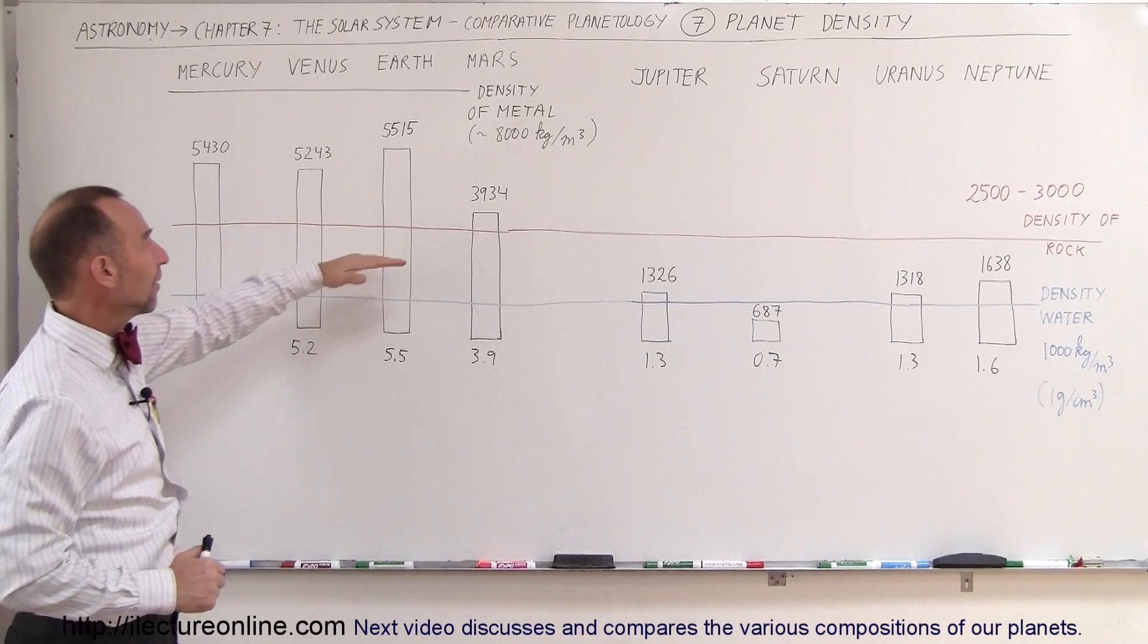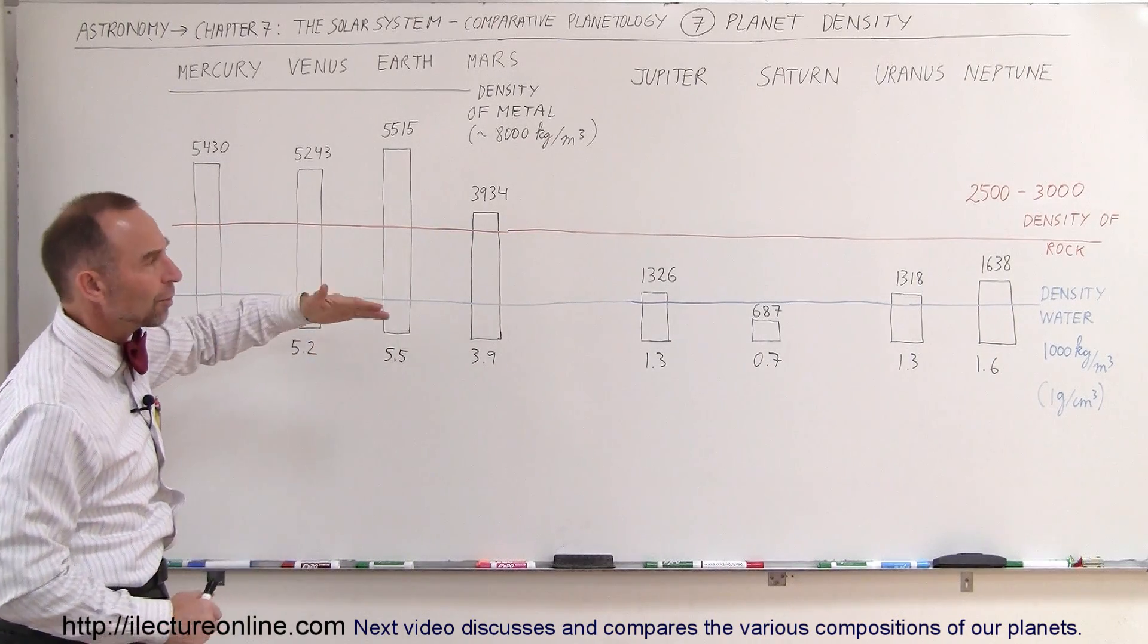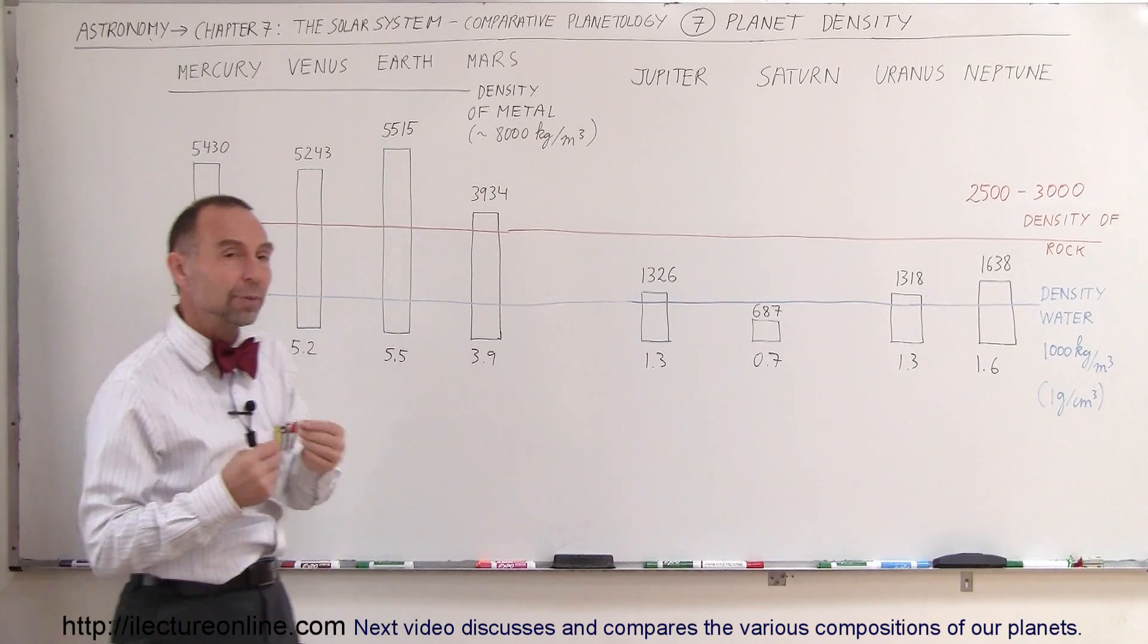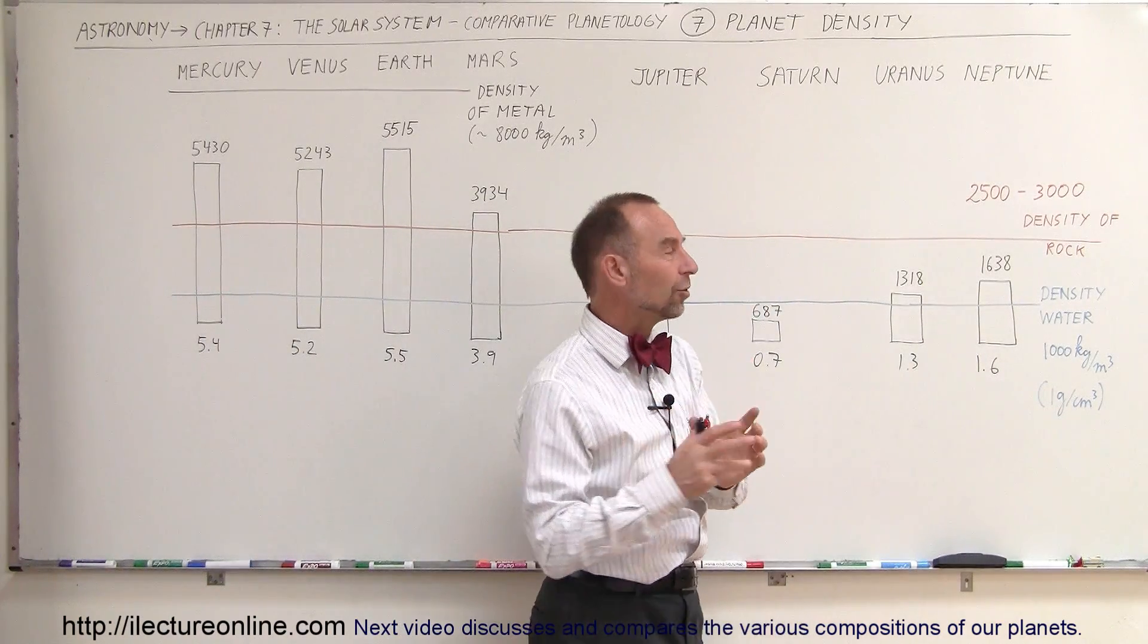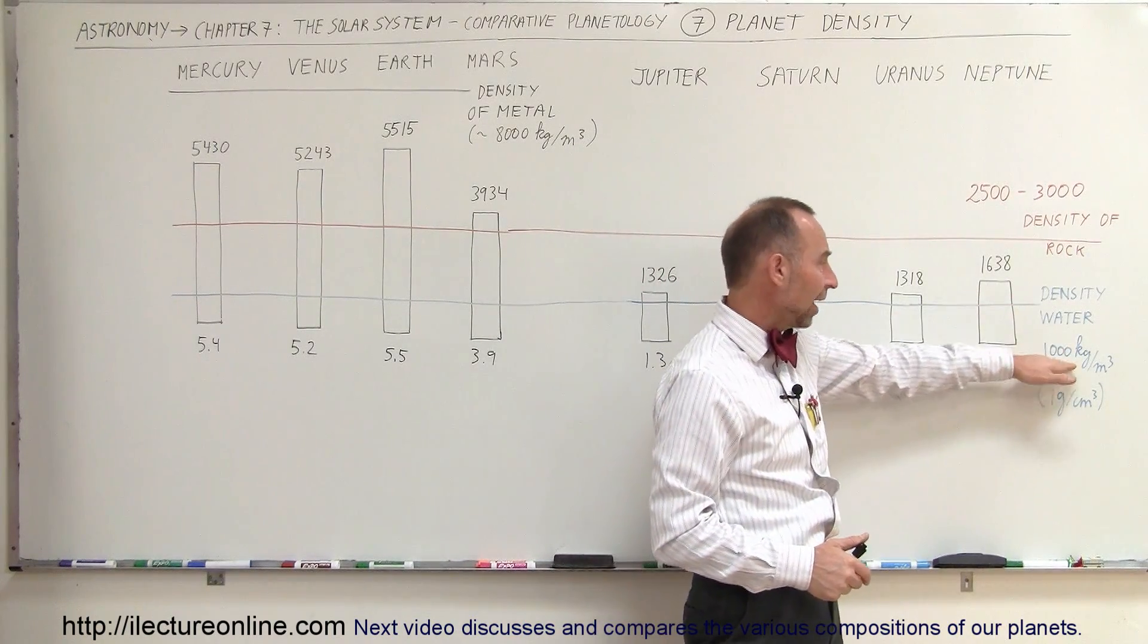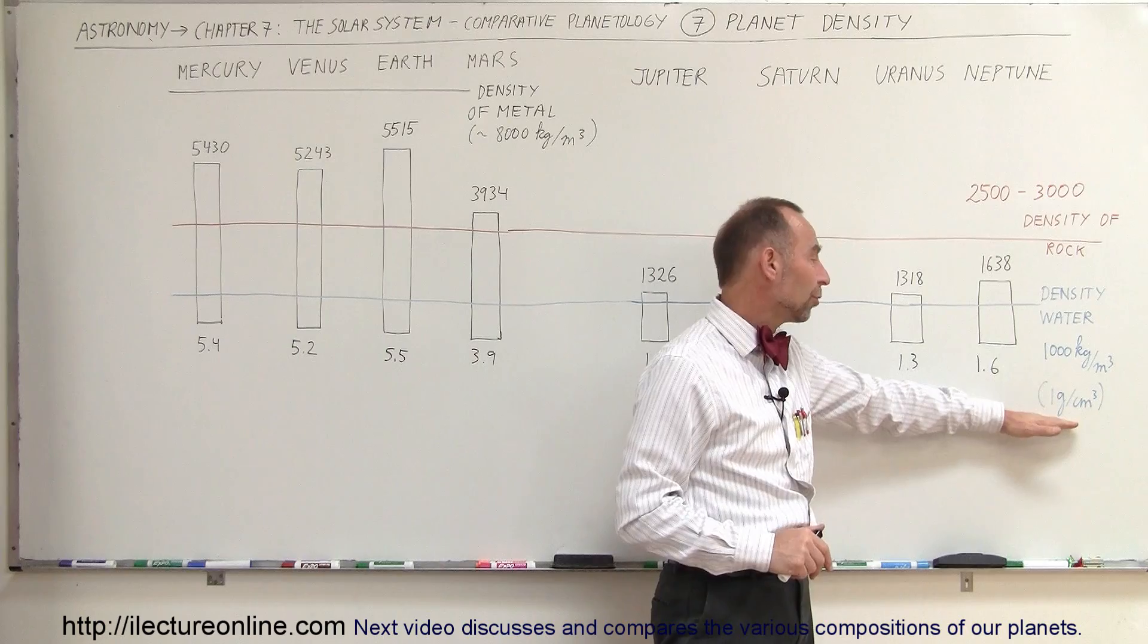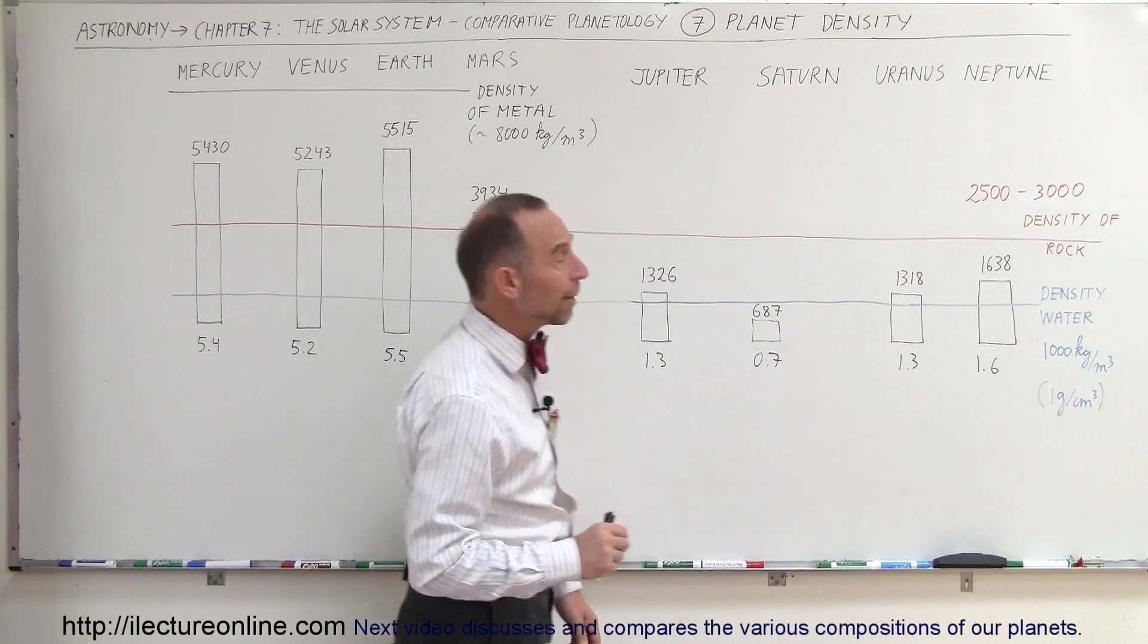Notice that all of the terrestrial planets have densities greater than the density of rock. The density of rock is somewhere between 2,500 and 3,000 kilograms per cubic meter. That's the units for density. Sometimes they're also expressed in terms of grams per cubic centimeter. Also we want to relate it to the density of water and the density of a typical metal. The density of water is 1,000 kilograms per cubic meter, very close to this number. So again then in grams per cubic centimeter for water it's 1 gram per cubic centimeter.